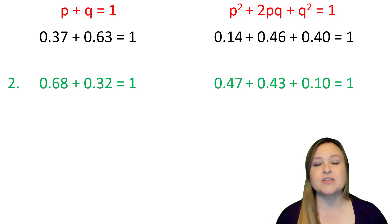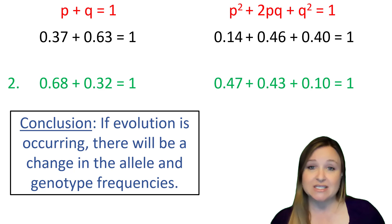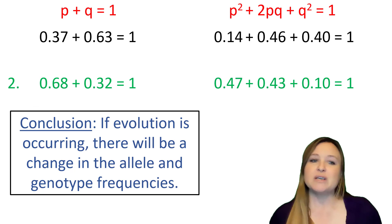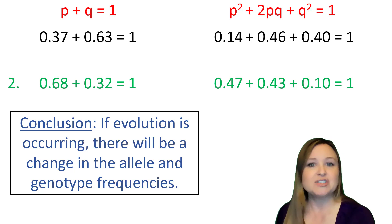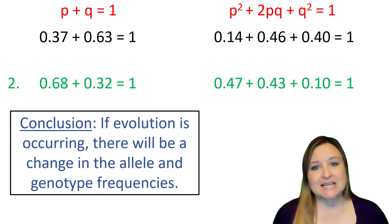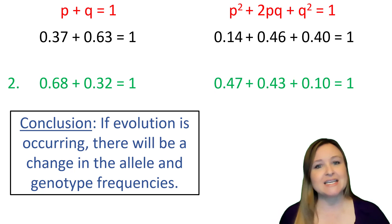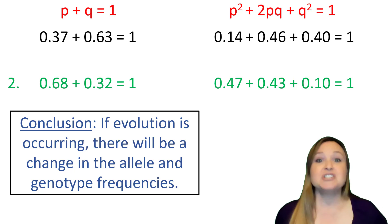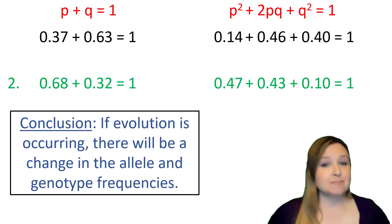This is how we use the Hardy-Weinberg principle: if evolution is occurring, there will be a change in allele frequencies. And if allele frequencies change, then genotype frequencies P², 2PQ, and Q² will change as well. This was an explanation of what the Hardy-Weinberg principle is, the equations that are part of it, and what to expect in populations that are evolving or not evolving. If you're interested in practice questions, check out my video on Hardy-Weinberg practice questions, where we'll walk through real-life examples to derive allele and genotype frequencies.